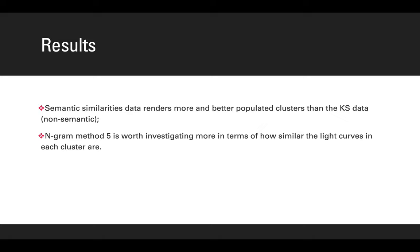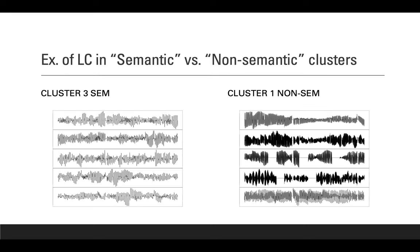Based on many trials and observations, we found two important results: that the semantic similarities data renders more and better populated clusters than the KS data, which is non-semantic, and that the n-gram method five is worth investigating more in terms of how similar the light curves in each cluster are.